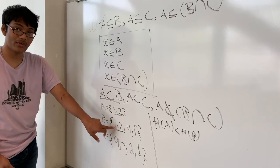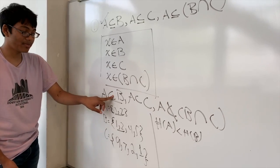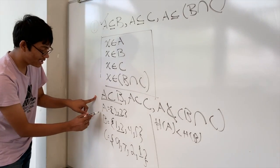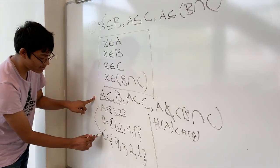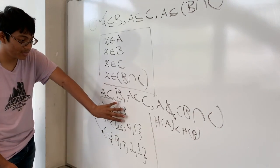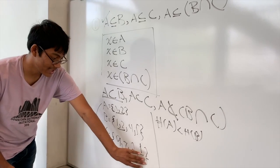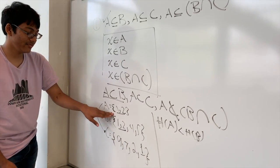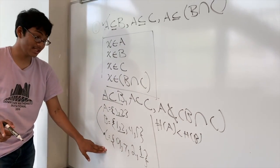Because A has a cardinality of 2, whereas B has a cardinality of 4. Thus, A is a proper subset of B. And you can use the same reasoning to show that A is a proper subset of C, because all the elements of A are in set C and the cardinality of A is less than the cardinality of C.